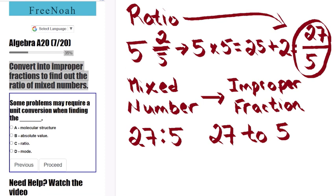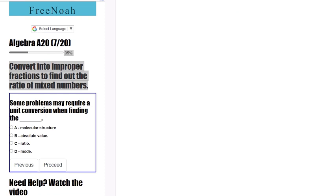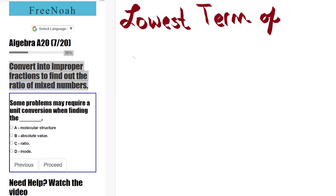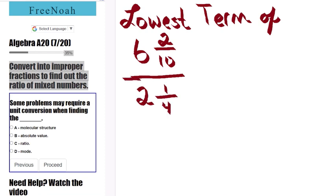Now let's move on to a problem with two mixed numbers. We're going to try to simplify to the lowest term here. So let's take 6 wholes and 2 over 10 over 2 wholes and a quarter, 1 over 4.